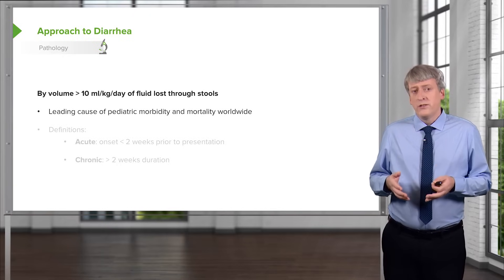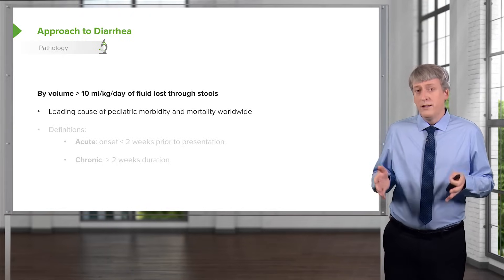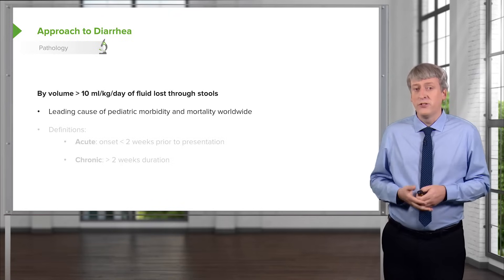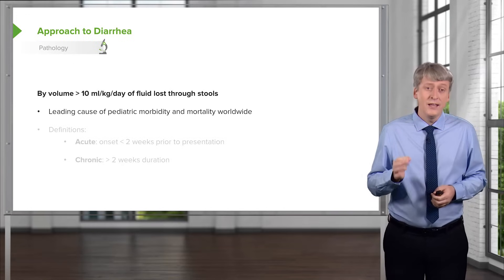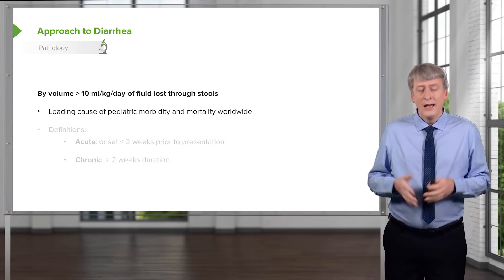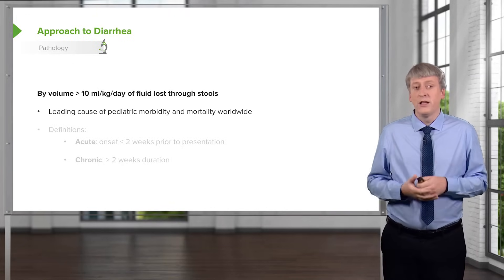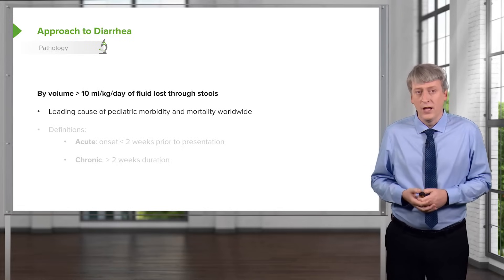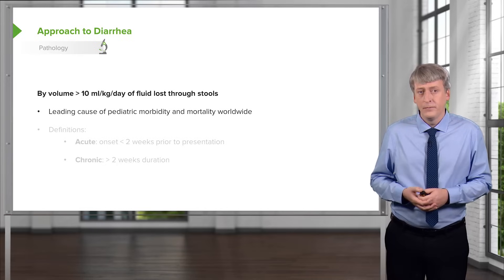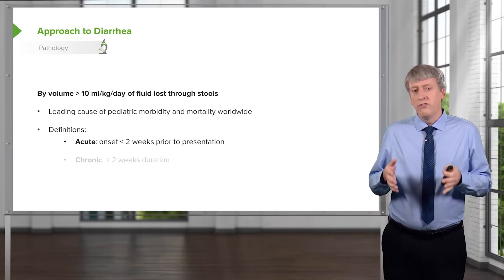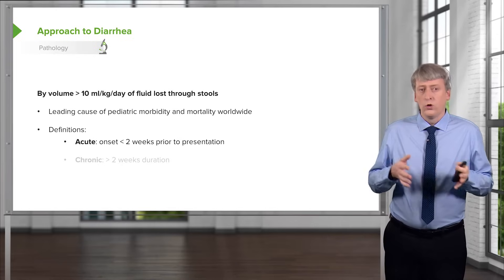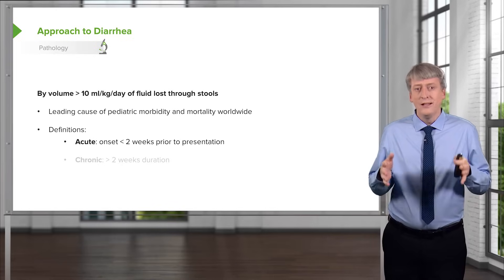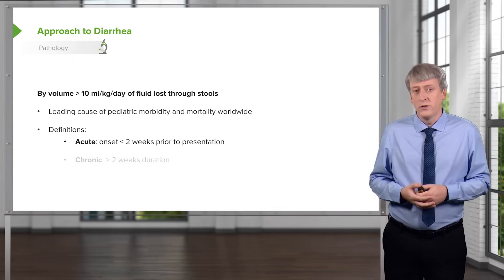The leading cause of death worldwide in terms of morbidity and mortality in children is infectious diarrhea. Rotavirus is a killer in the developing world. In the United States, it's much less common because we have a medical system where children can come and get help if they're feeling dehydrated. Generally, we define diarrhea as acute or chronic. The vast majority of diarrhea is acute and it is less than two weeks prior to presentation.